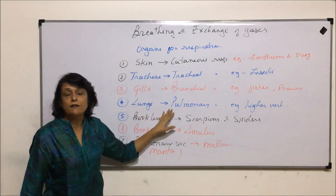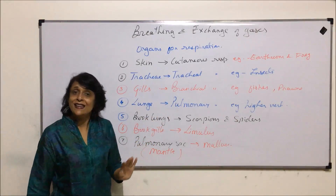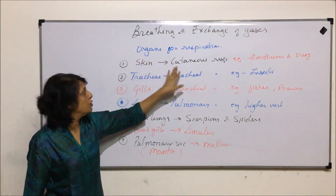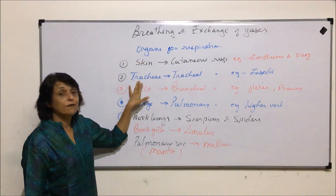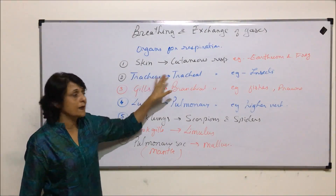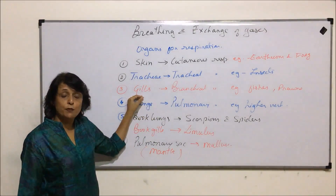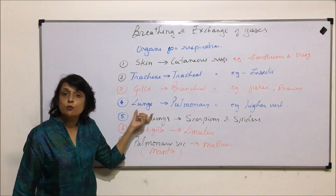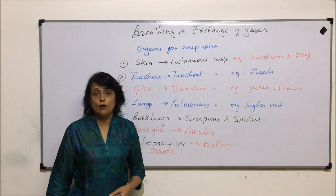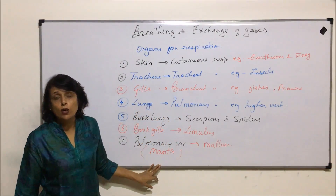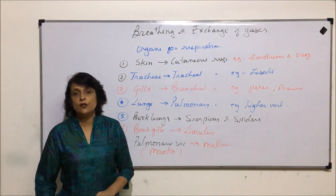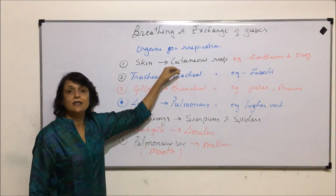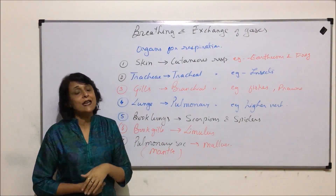To summarize: if the respiratory structure is skin then it is cutaneous respiration; if they are tracheal chitinous tubes then it is tracheal respiration; if gills are the respiratory structure then it is branchial respiration; and if lungs are the respiratory structures then it is pulmonary respiration. These are certain other organs or structures which help in gaseous exchange. From the next segment we will start discussing these types of respirations in detail.